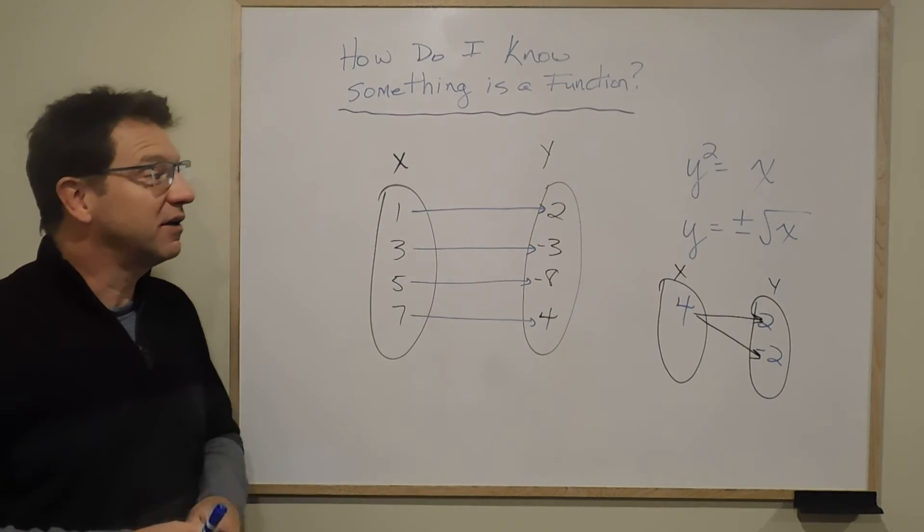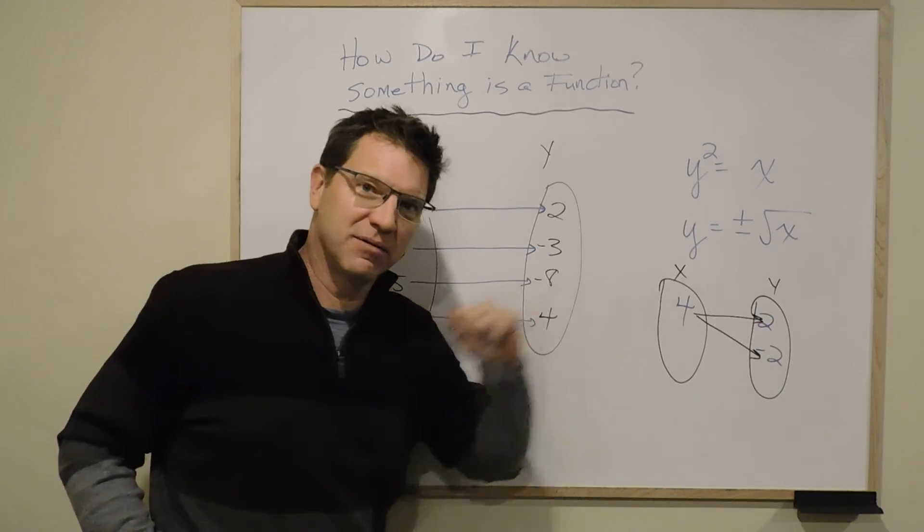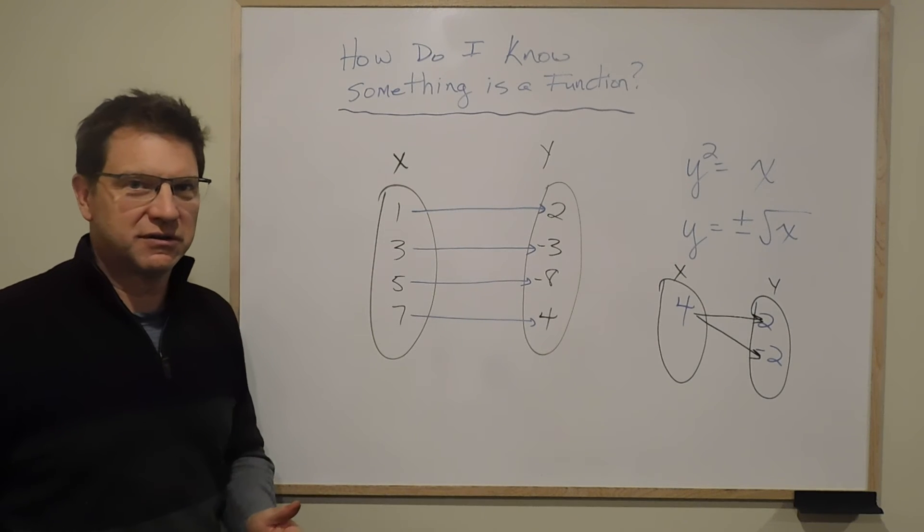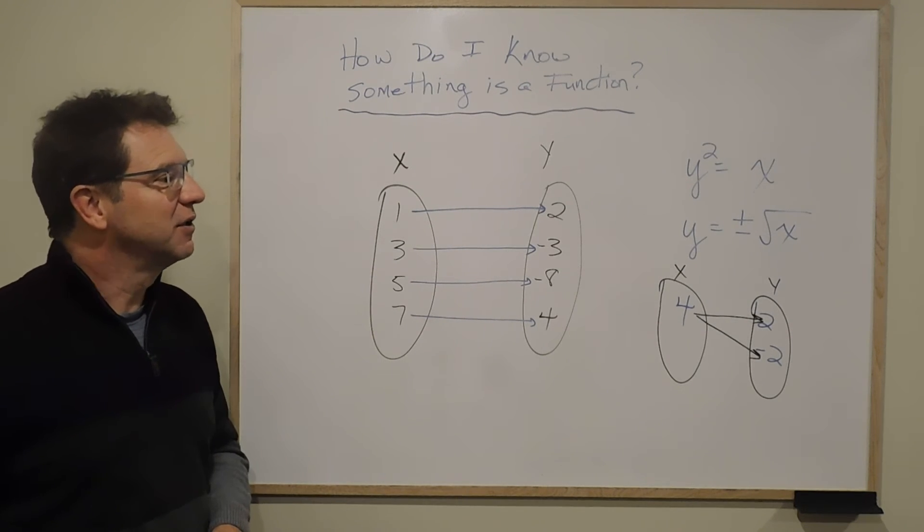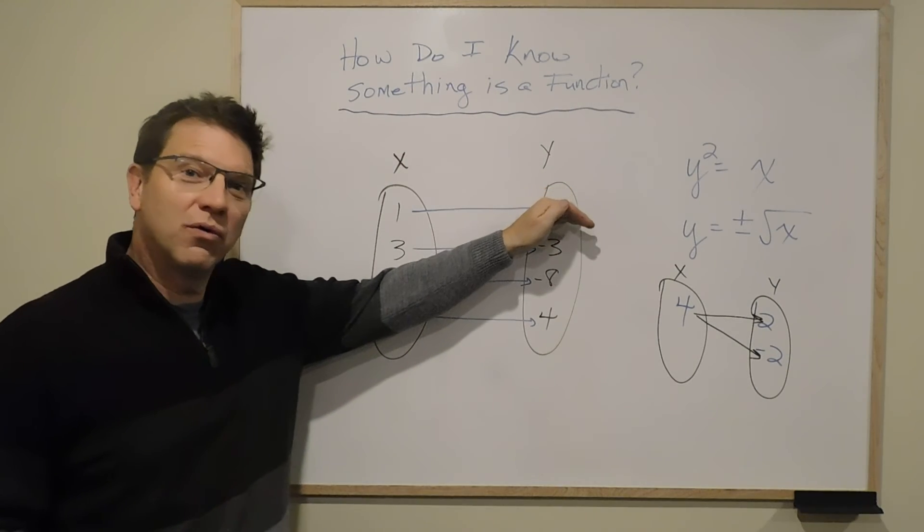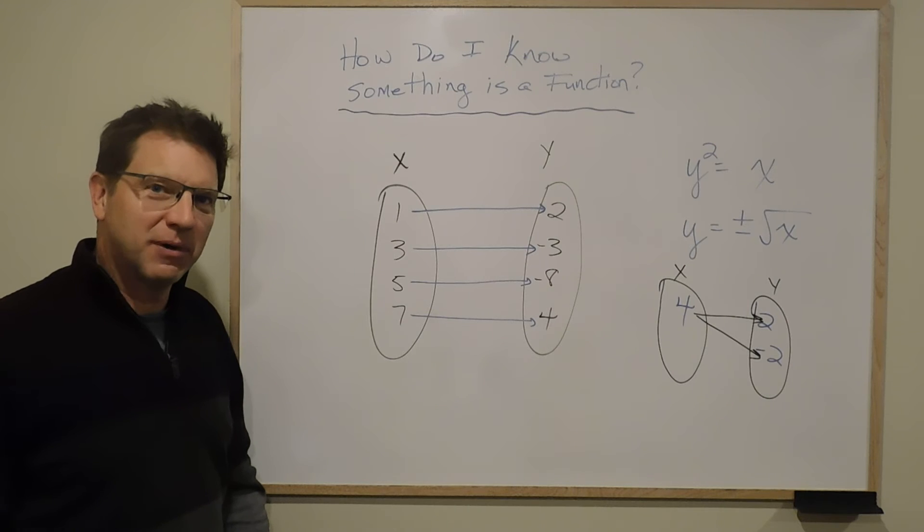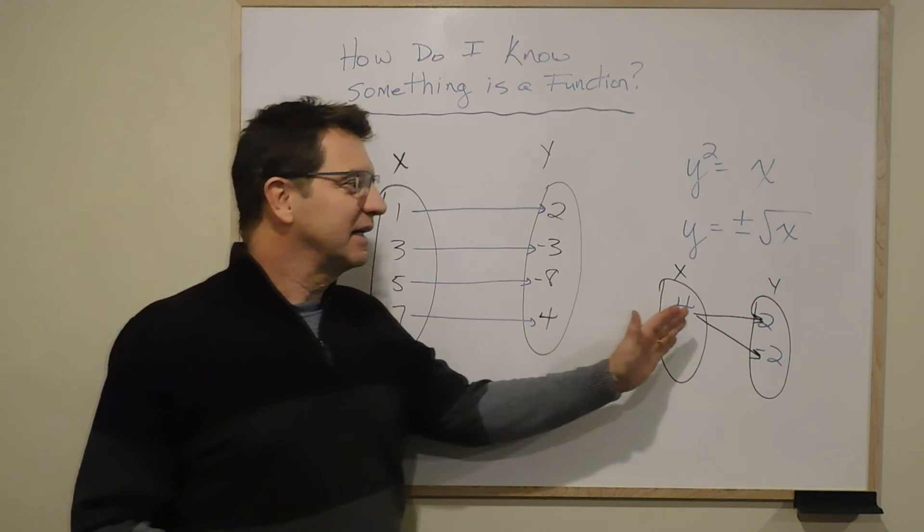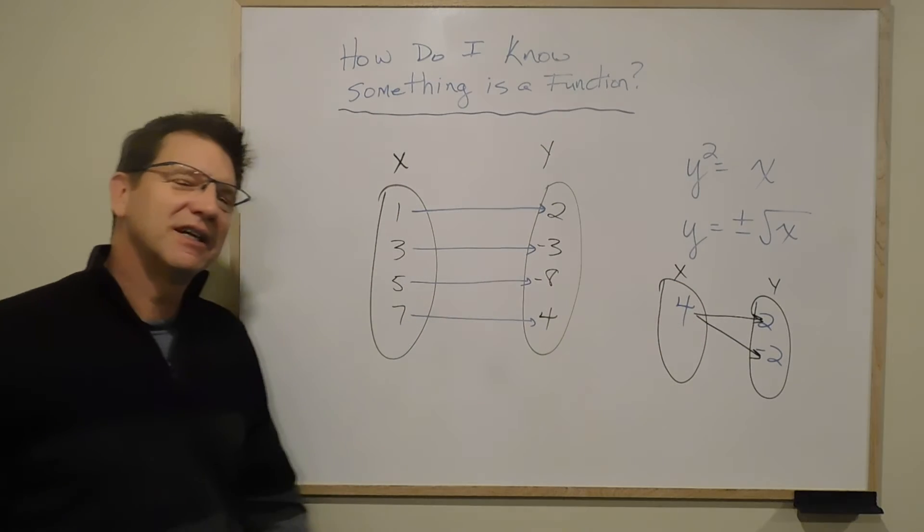It's still a relation. My x is related to my y, so it's still a relation, but it's not a function, because a function means one x has to have its own y answer that's possible. So if an x has two possible y's, it's not a function.